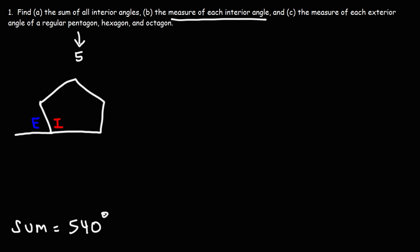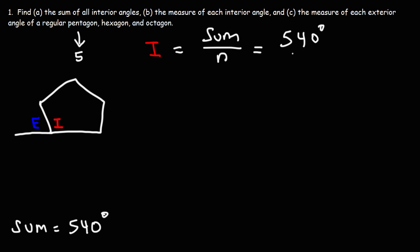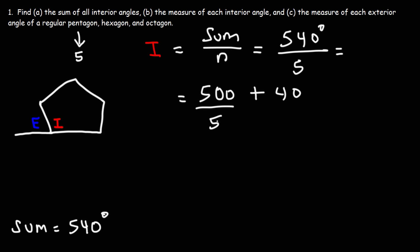Let's calculate the measure of each interior angle. To find it, we take the sum of all the angles and divide by n. So it's 540 degrees divided by five sides. Breaking it up mentally: 500 divided by 5 is 100, and 40 divided by 5 is 8, so the measure of each interior angle is 108 degrees for a regular pentagon.